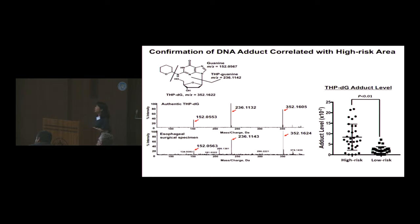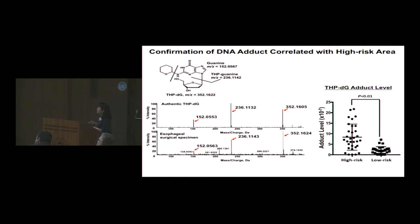In the next step, we confirmed the DNA adduct structure correlated with the high-risk area, because previously we had only predicted the structure using m/z values. First, we chemically synthesized THP-dG and analyzed it by LC-MS/MS accurate mass spectrometry. This data shows the fragmentation patterns: the upper panel shows the authentic DNA adduct and the lower panel shows what was found in the esophageal surgical specimen. Both show very similar fragmentation patterns, and the m/z values are almost identical between the authentic standard and the surgical specimen.